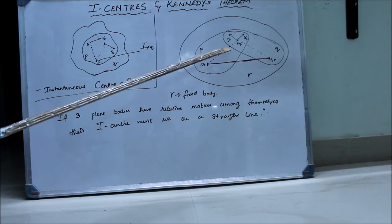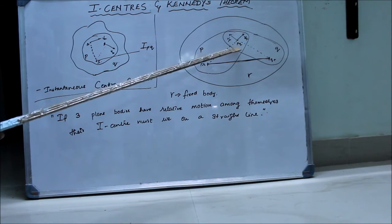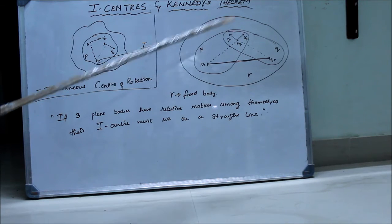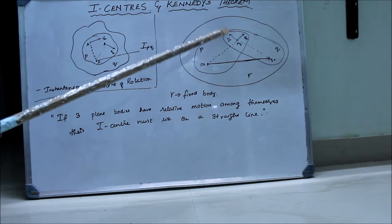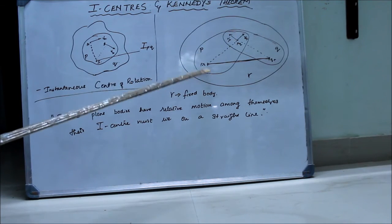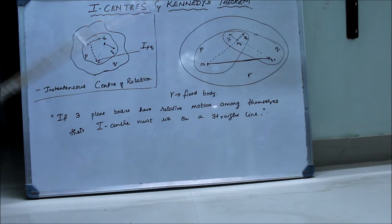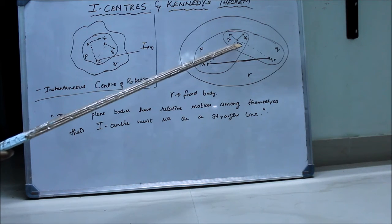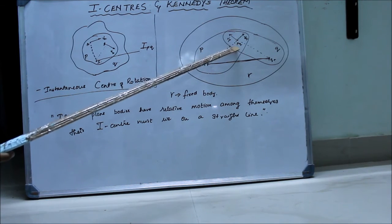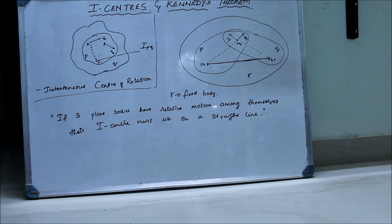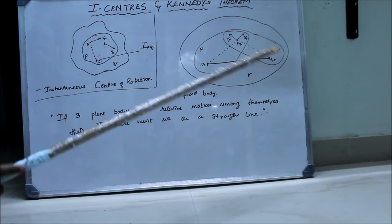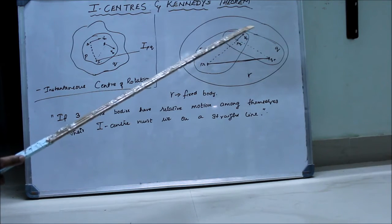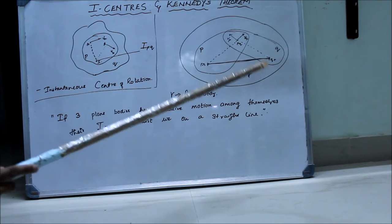Now, we consider the mutual I-center PQ with respect to body P, and we draw the velocity of body P which will be perpendicular to the line joining PR and PQ. So we see that VP is in this direction — that is the motion of the mutual I-center PQ. Now we consider the same mutual I-center PQ with respect to body Q, and draw velocity VQ, which is perpendicular to the line joining PQ and QR.